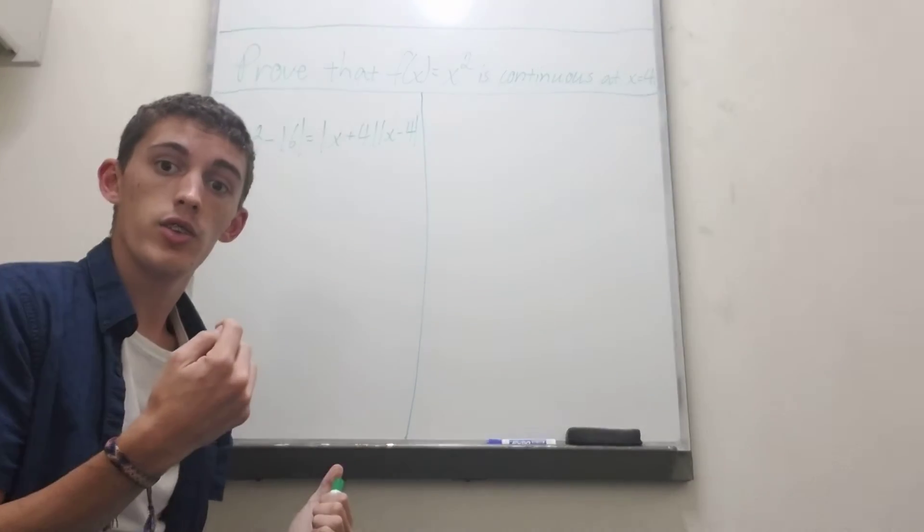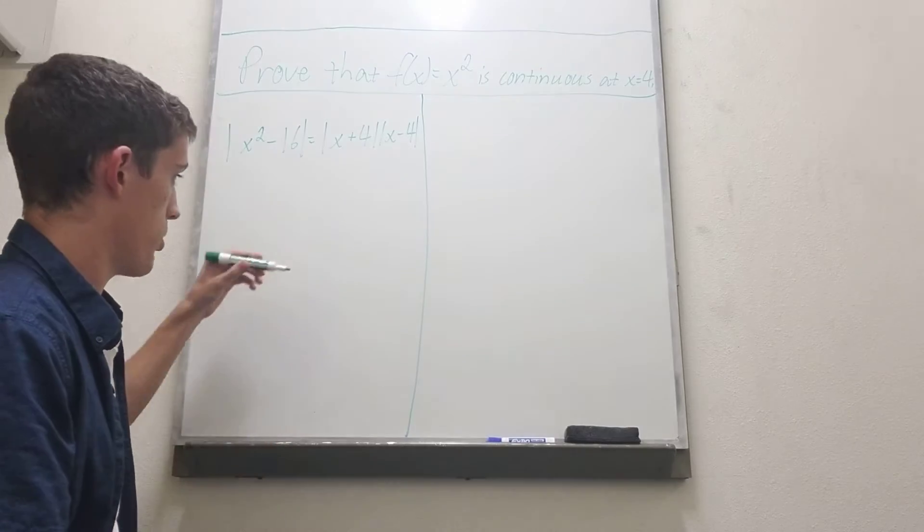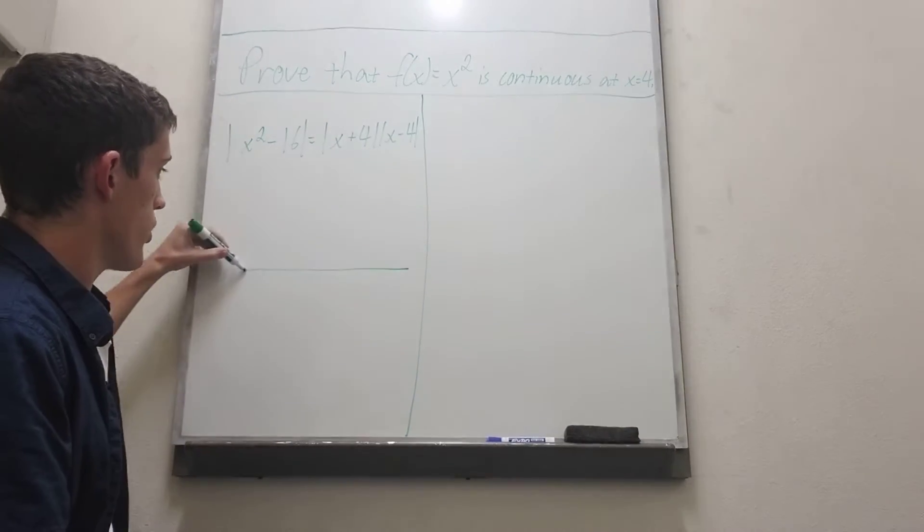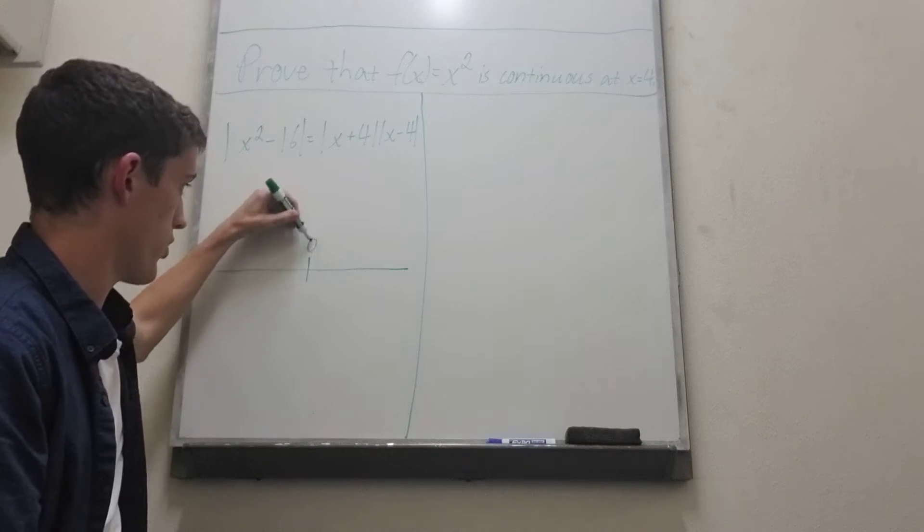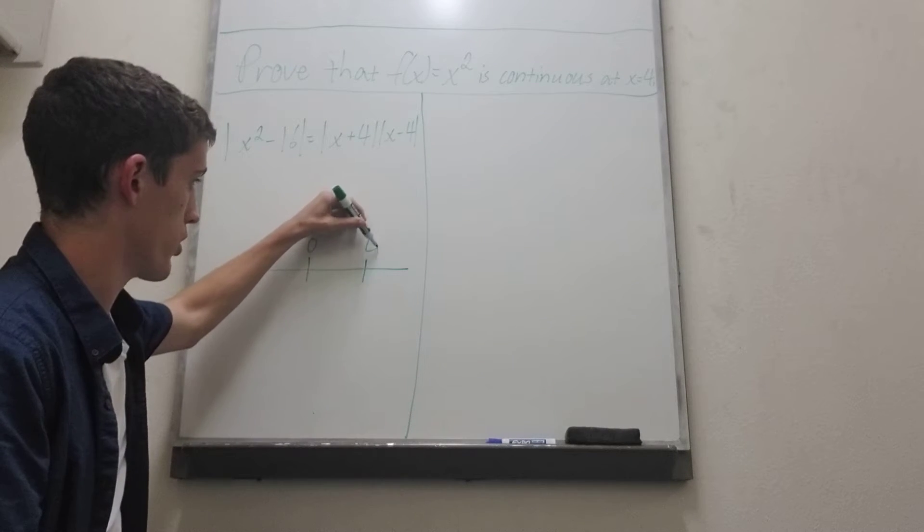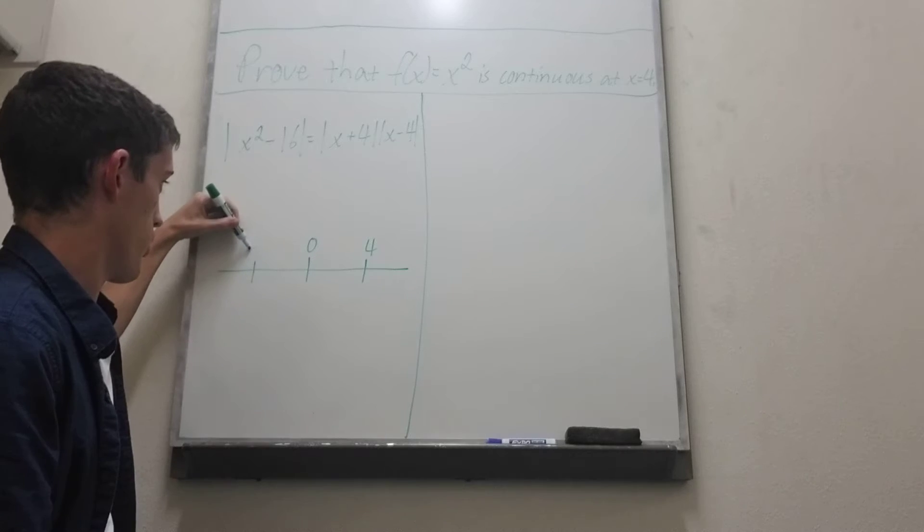Then here we need to think about where these numbers are coming from on the number line. So we have 0, 4, negative 4.